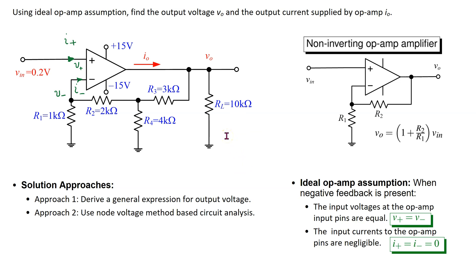In this video, the goal is to solve for the output voltage V0 and the current supplied by the op-amp I0. The given circuit is a modified version of a non-inverting op-amp amplifier. The input is applied at the positive pin of the op-amp. There is negative feedback, and in the feedback path we have a ladder network of resistors.